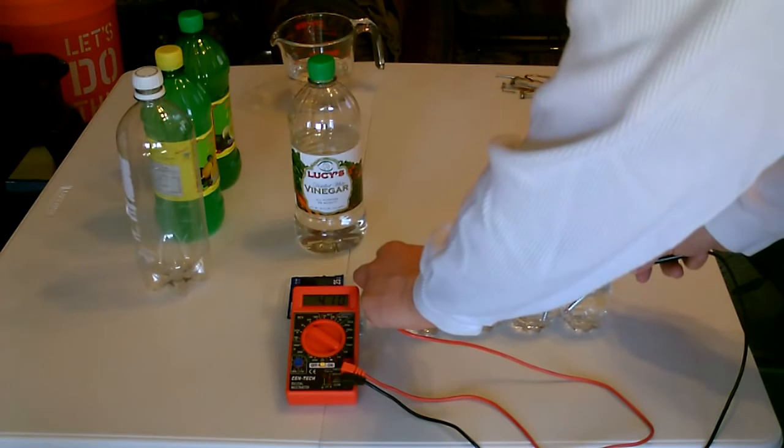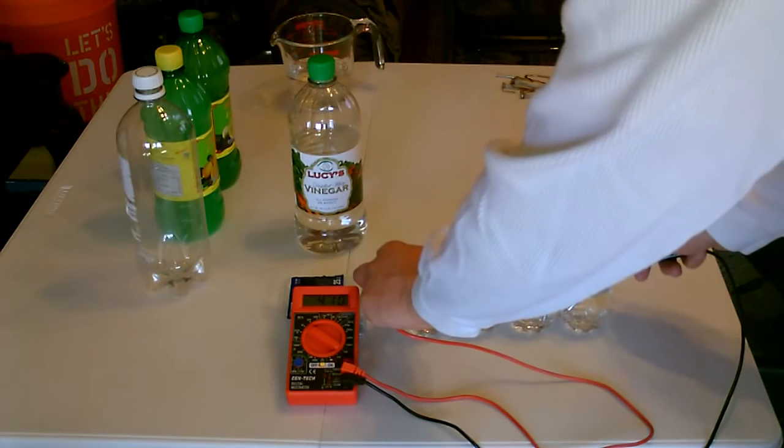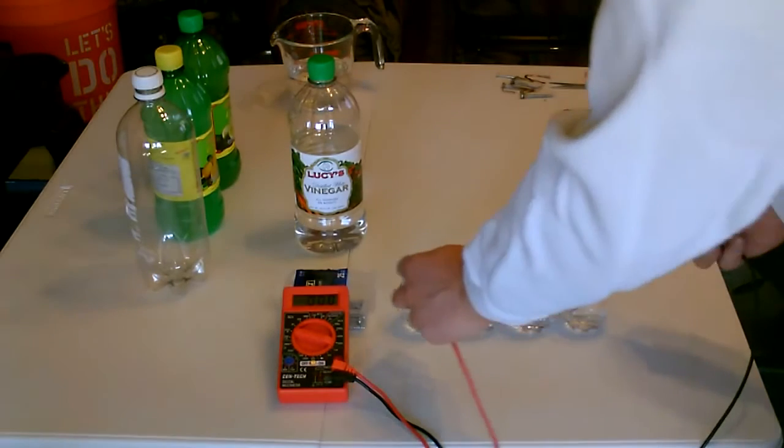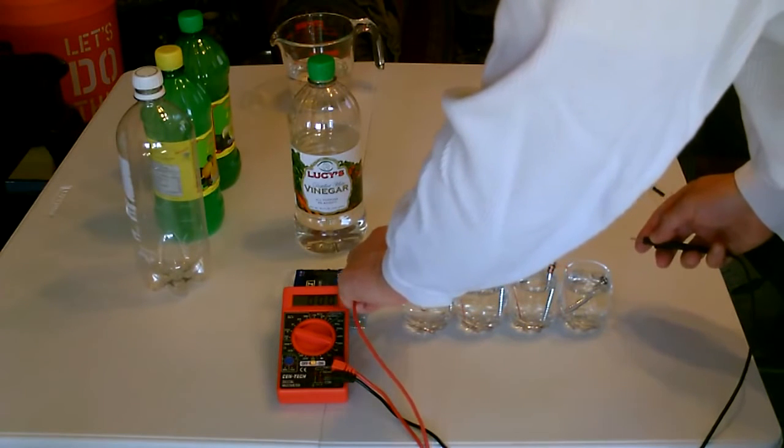The tap water one was 3.25 volts roughly. Vinegar is holding very steady at 4.1 volts, so definitely stronger than the tap. See what kind of amperage we can get out of this, this is the vinegar battery again. 2.3 milliamps.